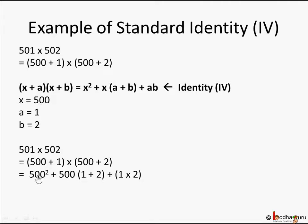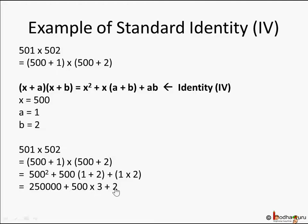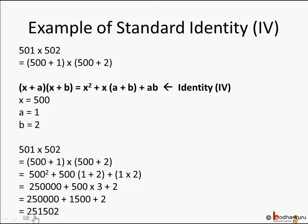You can solve it: 500² = 500 × 500 = 250,000. Then 500 × (1 + 2) = 500 × 3 = 1,500. And 1 × 2 = 2. So this is 250,000 + 1,500 + 2.